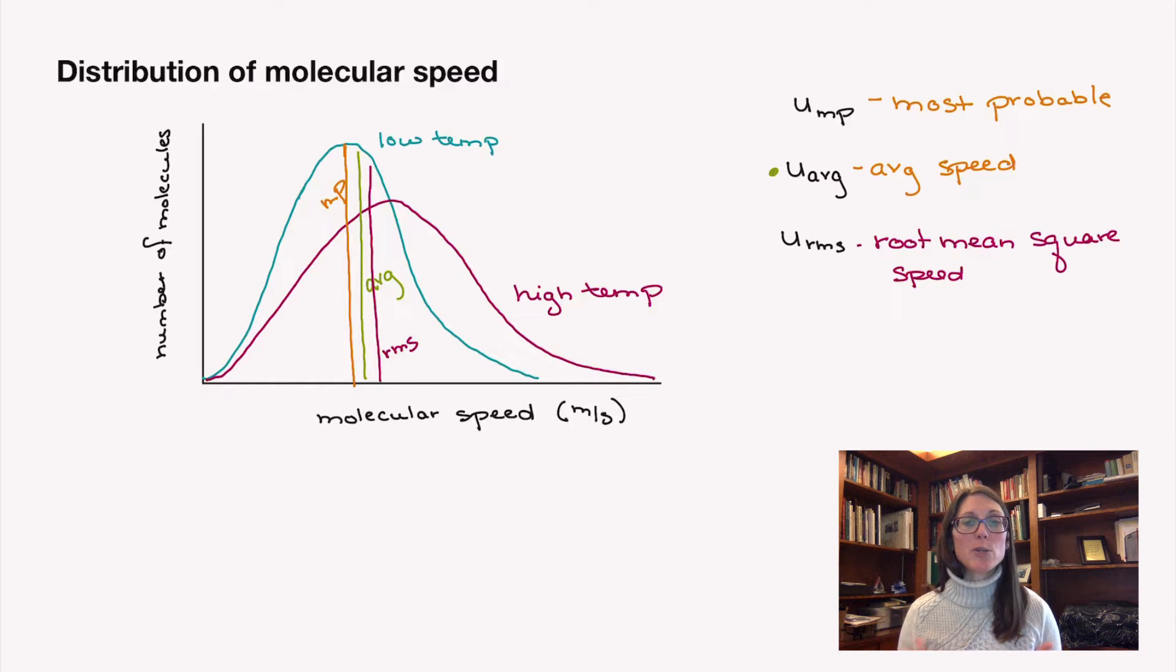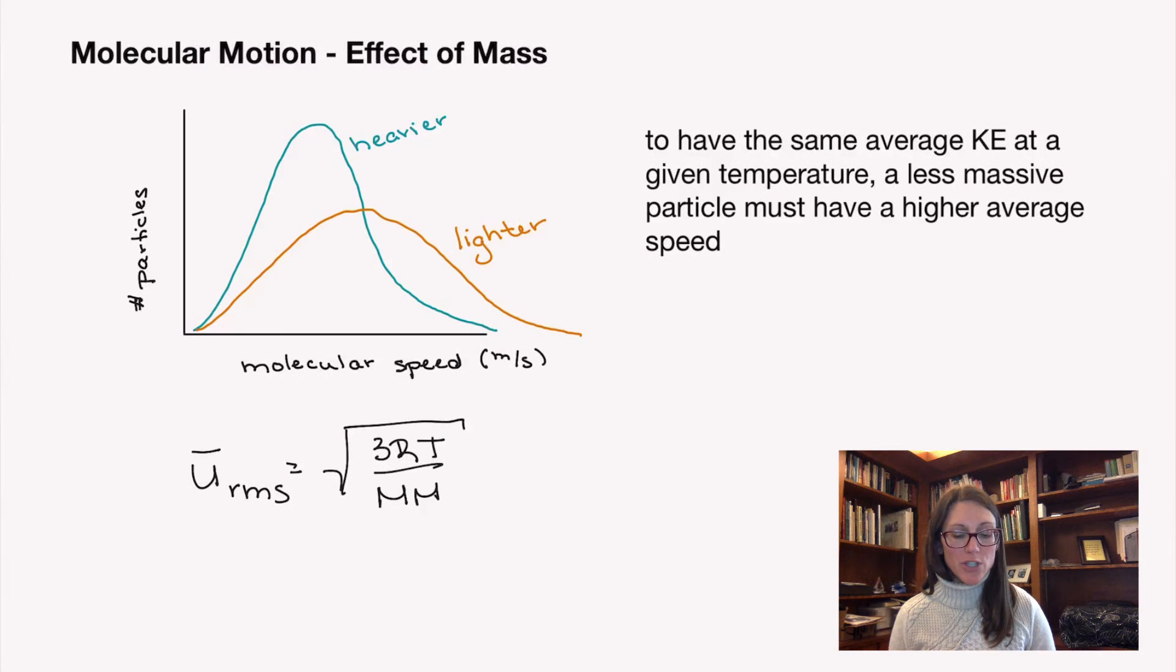As we continue working, it's actually the root mean squared speed, the one that's related to kinetic energy, that we'll be using more than most probable or average speed. Let's take a look at this motion again, but now instead of focusing on one particular molecule at different temperatures and seeing how that changes things, let's talk about how mass impacts things. At a particular temperature, every gas will have the same average kinetic energy.